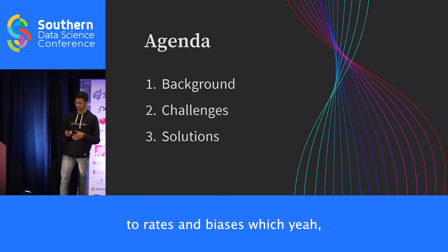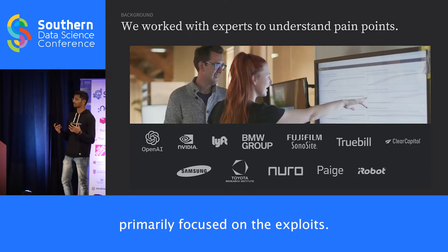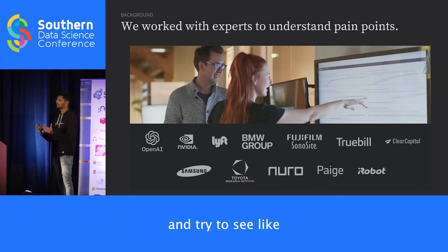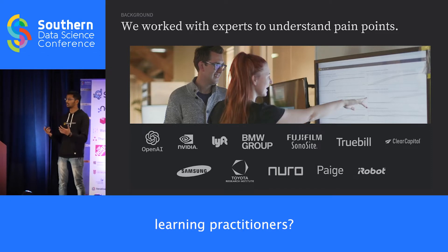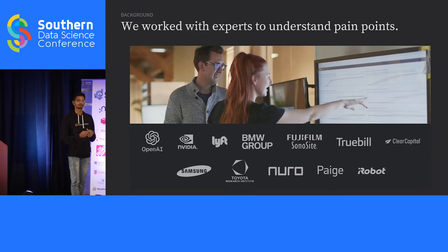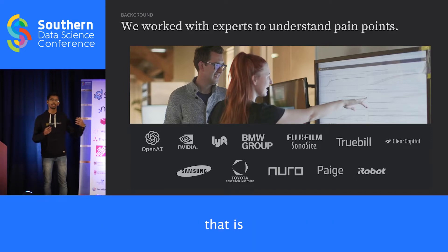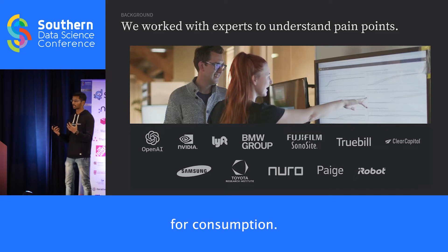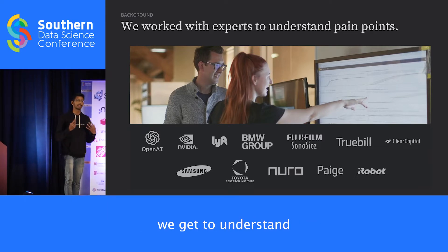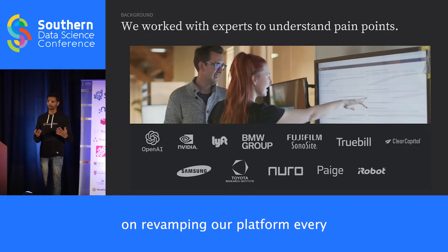Weights and Biases is a machine learning developer-friendly platform, designed primarily focused on experts. We work on a day-to-day basis with machine learning practitioners to understand their main pain points. For example, you can see an image of an OpenAI office where the Weights and Biases product is actually put up on the office walls, used by everyone within the OpenAI team. Similarly, we have a bunch of other customers who love to use our platform, and through these users we constantly understand their pain points and revamp our platform.